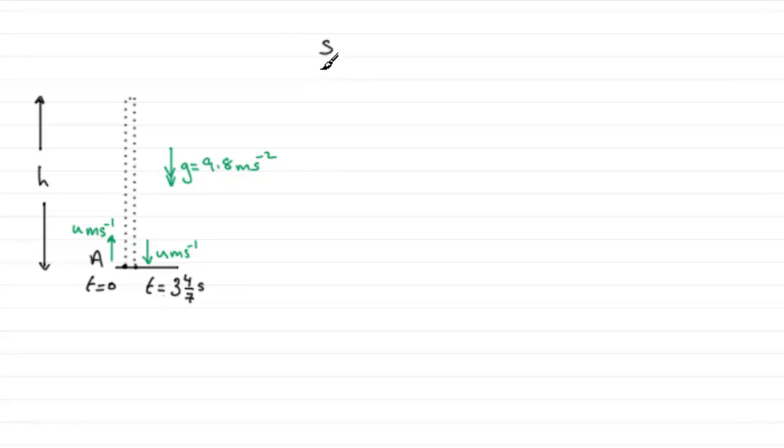S, U, V, A, and T—what do we know? We need to take upwards as positive again in the direction of the initial velocity. So s is going to be displacement starting from here, a distance H, so the displacement will be H. U, the initial velocity we worked out in the previous part—we had to show that it was 17.5. I'm going to write that as a top-heavy fraction as 35 over 2.